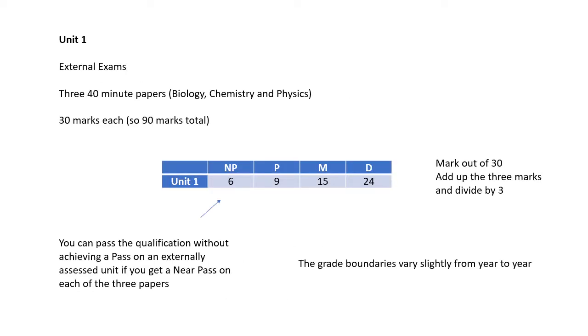So unit one is an external exam. In fact, it's three external exams. They used to do all of them together in two hours, but they've split it into three now. So three 40 minute papers, a biology, a chemistry and a physics paper. Each one is worth 30 marks. So the whole thing is out of 90. Now, what they do is they add up the marks out of 90 and divide by three. So you end up with a mark out of 30.